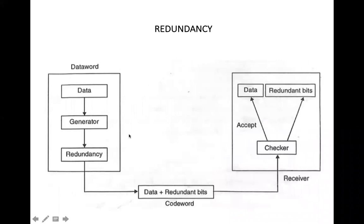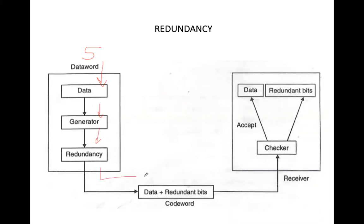So with redundancy, on the sender side the data word is passed to the generator, which combines it with duplicate bits to form the code word. On the receiver side, a checker is placed — it receives the data along with the redundant bits and validates it. If the data is received correctly, it accepts it. How exactly the checker works will be covered in the next topic: error detection techniques.